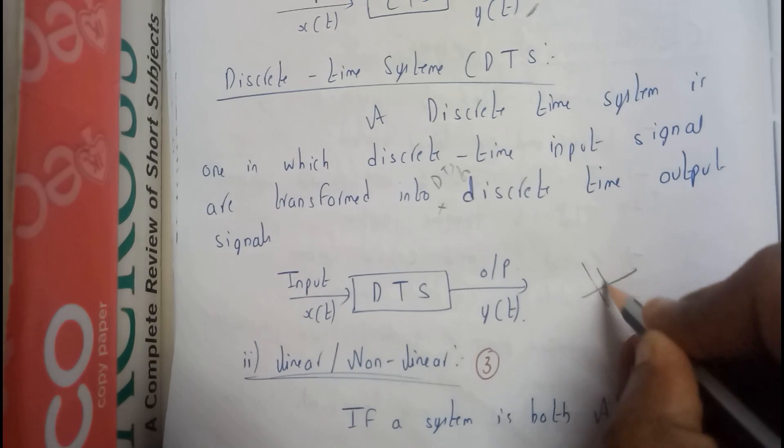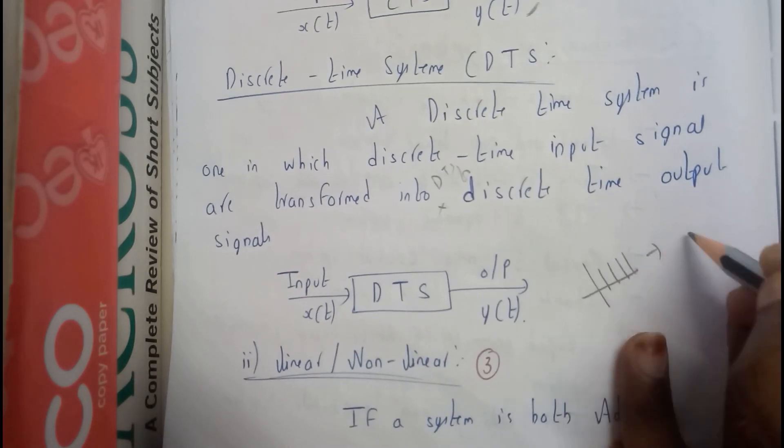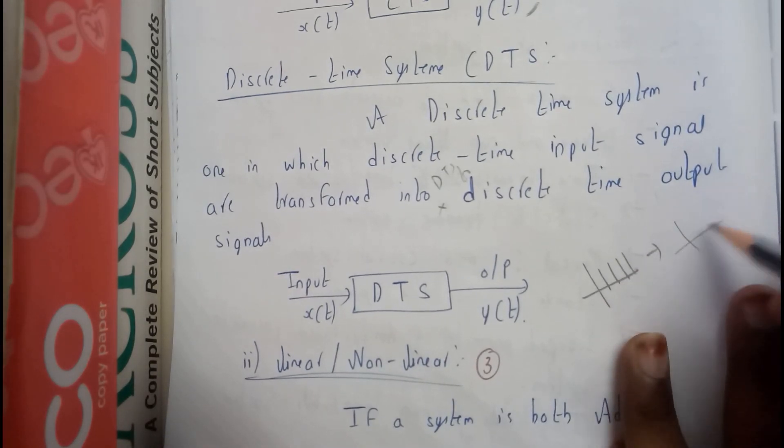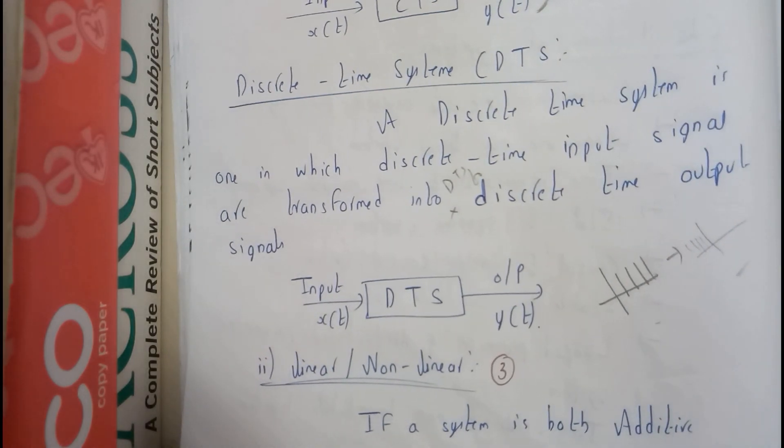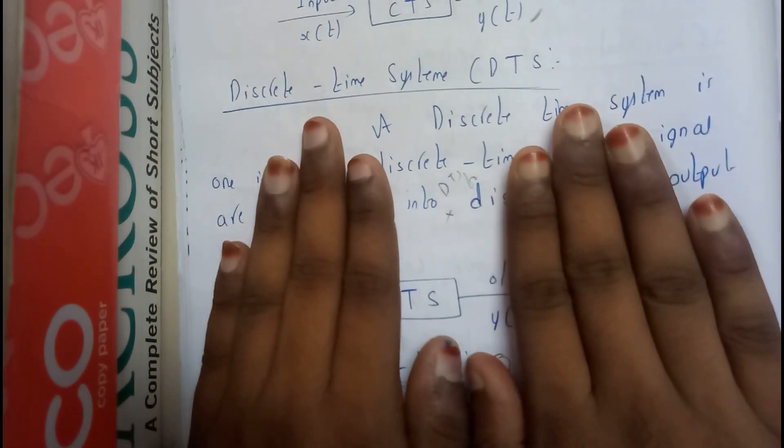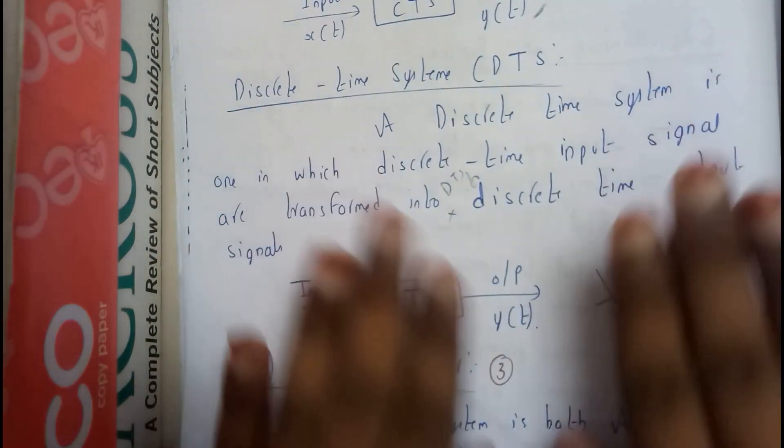Whenever we pass a discrete time signal through the DTS, we will get a signal like this. It may be in the exact opposite direction. We will be getting only discrete. If we pass discrete, we get discrete. If we pass continuous, we get continuous.